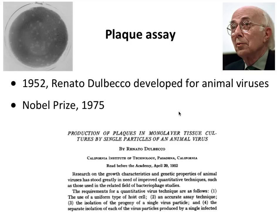Dulbecco received the Nobel Prize in 1975 for this and other discoveries. On the upper left is his first plaque assay with poliovirus. His paper, titled 'Production of Plaques in Monolayer Tissue Cultures by Single Particles of an Animal Virus,' is shown here—that phrase 'by single particles' is important and we'll return to it. This allowed titration of animal viruses in 1952, not long after John Enders and colleagues showed poliovirus could be grown in cultured cells.